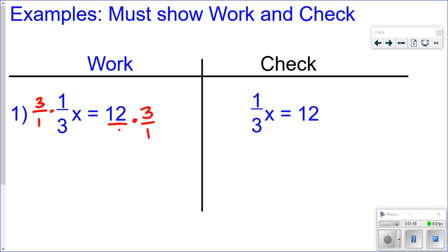So I put the 12 over 1. Over here, we get 3 over 3, which is 1. So these just cancel out, because 1x is the same thing as x. And on the other side, I get 36 over 1, which equals 36. So x is equal to 36.